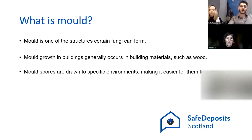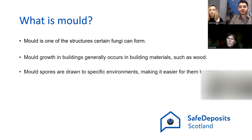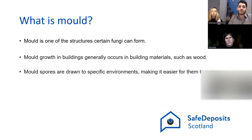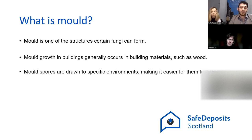So first of all, we'll start with what is mould. Mould is one of the structures certain fungi can form. Mould growth in buildings generally occurs as fungi inhabits building materials such as wood. Many building products commonly incorporate paper, wood products or solid wood members such as paper covers, dry wall, wood cabinets and insulation. Most spores are drawn to specific environments, making it easier for them to grow. These spores will usually only turn into a full-blown outbreak if certain conditions are met. Various practices can be followed to mitigate mould in properties, but we'll come on to that a bit later with our hints and tips.